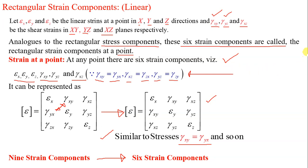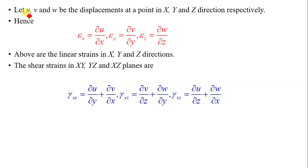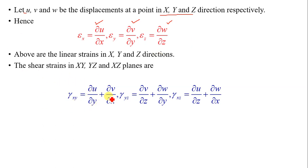Let u, v, and w be the displacements at a point in the x, y, and z directions respectively. Then epsilon x equals ∂u/∂x, epsilon y equals ∂v/∂y, epsilon z equals ∂w/∂z. The shear strains are: gamma xy equals ∂u/∂y + ∂v/∂x; gamma yz equals ∂v/∂z + ∂w/∂y; gamma xz equals ∂u/∂z + ∂w/∂x. These are the 6 strain equations.